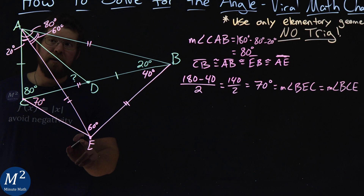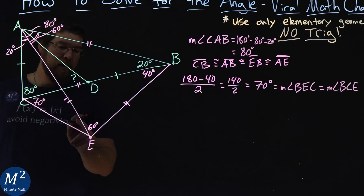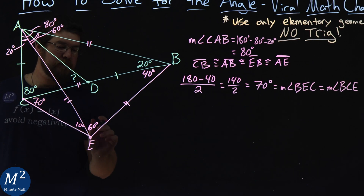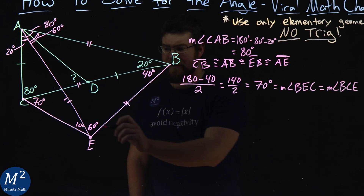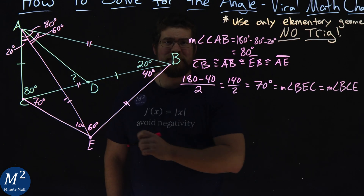So if angle BEC is 70 degrees, then angle CEA has to equal 10 degrees, since 70 minus 60 is 10 degrees.